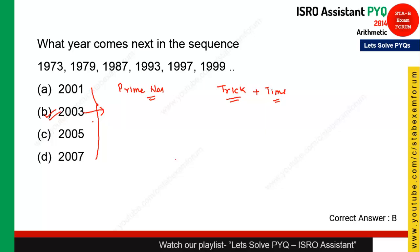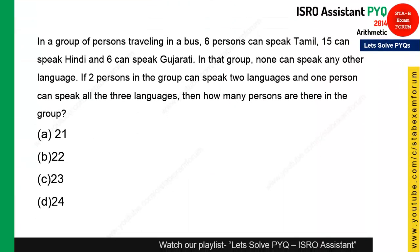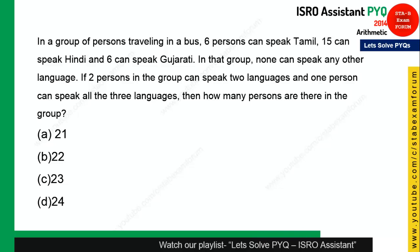Students who answered correctly in time are well-prepared. Let's see the next question — your time starts now. It is a long question and can take a lot of time, so we need to use a quick trick. The trick for this question is to draw a Venn diagram.